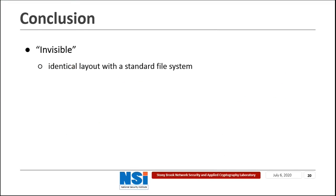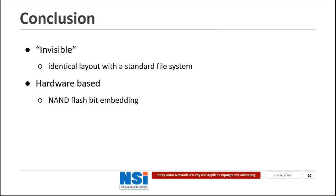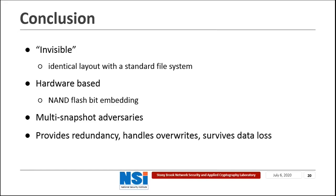To conclude, Infuse is an invisible file system that provides plausible deniability for NAND Flash devices. The invisible means that it has an identical layout as the standard file system YAFFS. Infuse is designed based on a hardware-based hidden bit embedding scheme in NAND Flash. Infuse stores hidden files in the out-of-band storage bits in NAND Flash, so that even multi-snapshot adversaries who can access the NAND Flash device several times cannot detect the existence of the hidden data and the use of Infuse. Infuse also provides redundancy, handles overrides, and survives data loss. Thank you.